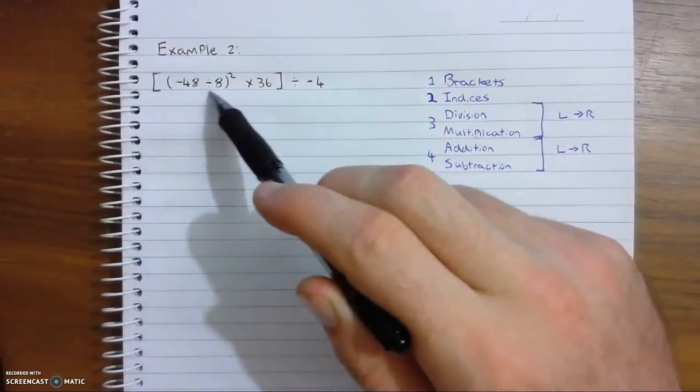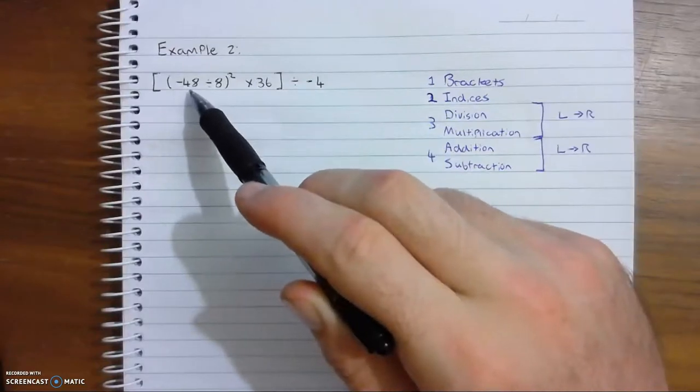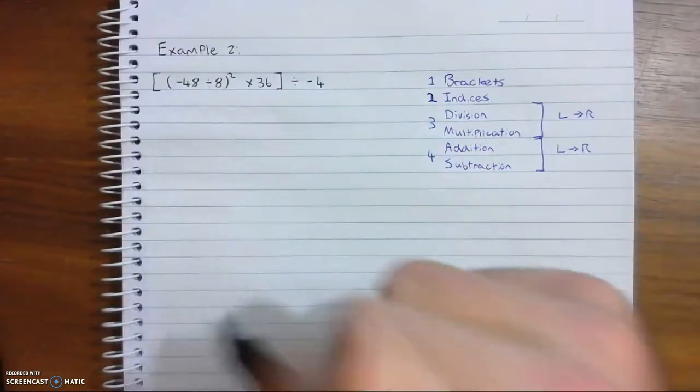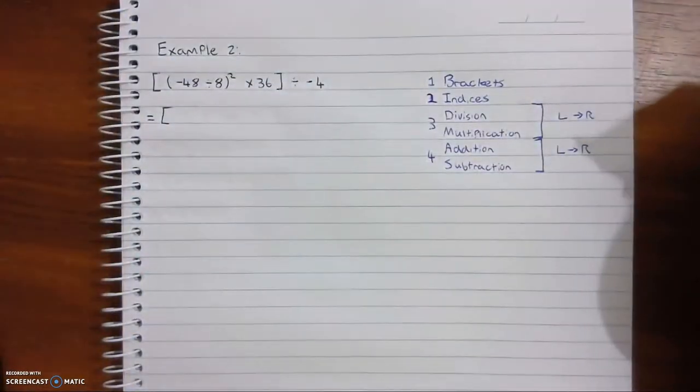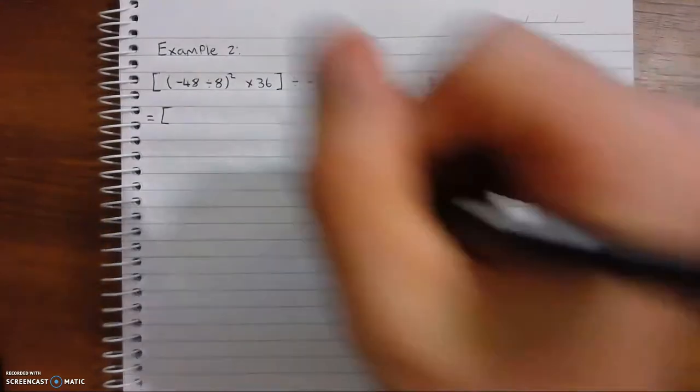So in these, negative 48 divided by 8. That would be, we'll write out our big brackets. And negative 48 divided by 8 would be negative 6.